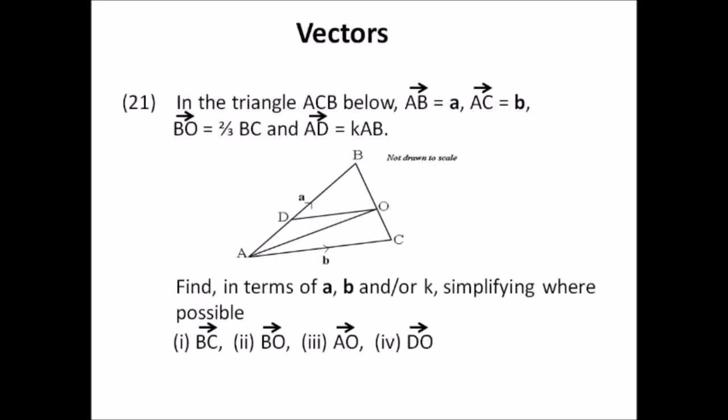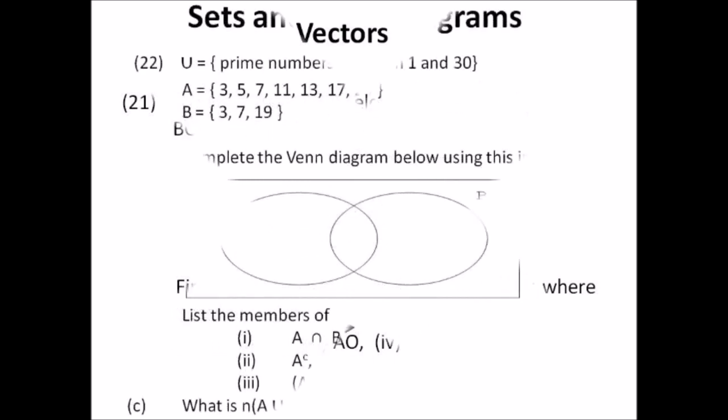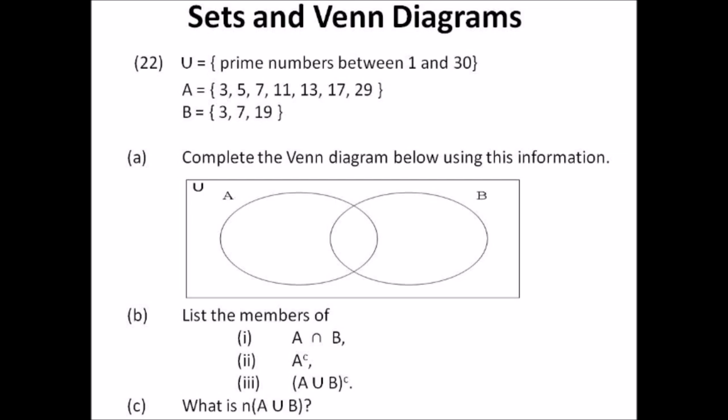Number twenty-one: vectors. In triangle AC, vector AB equals a, vector AC equals b, vector BO equals two-thirds BC, and vector AD equals k times AB. Find in terms of a, b, and/or k: vector BC, vector BO, vector AO, and vector DO. Remember direction is important. In a triangle you go from tail to head to find your solutions. Your answer will be in terms of a, b, and/or k.